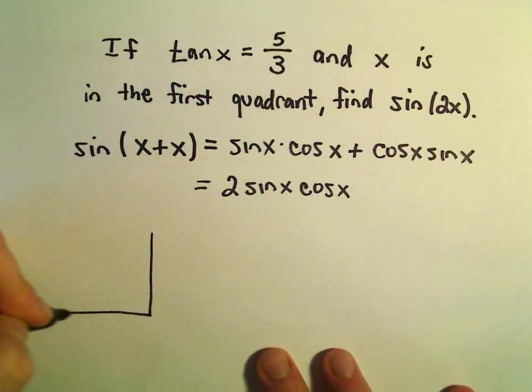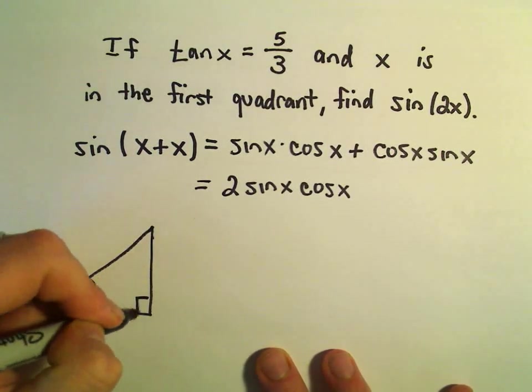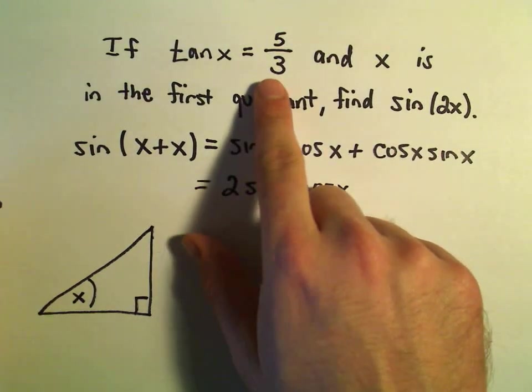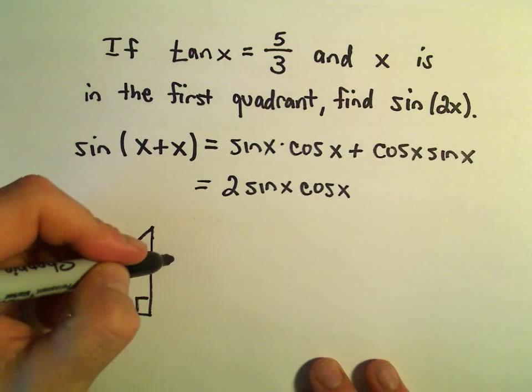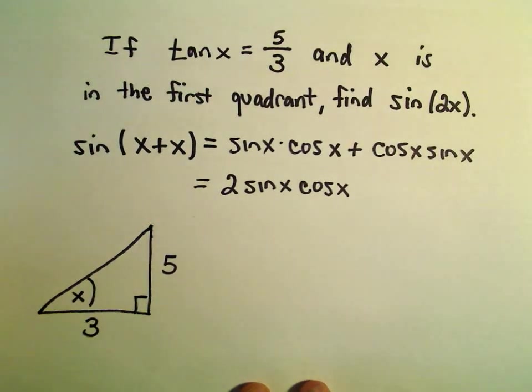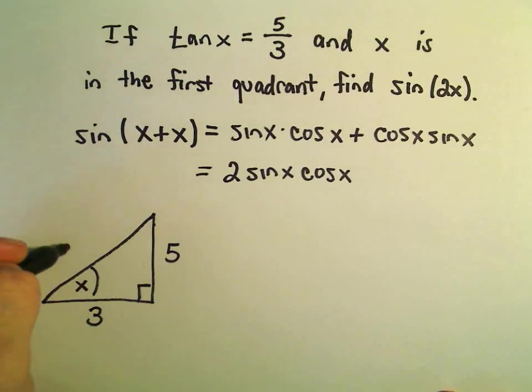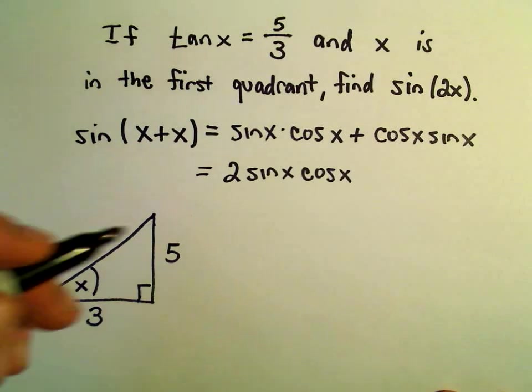So again, I'm just going to make a little right triangle. So there's my angle x. Again, tangent is going to be the opposite, which we'll label as 5, over the adjacent, which is going to be 3. So now we'll have to figure out the hypotenuse. So we'll call that h for hypotenuse.